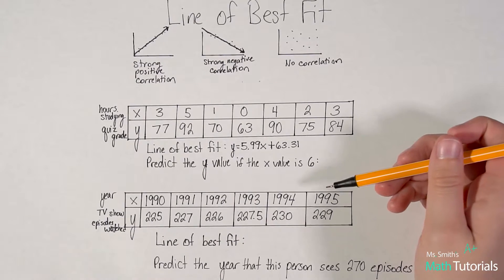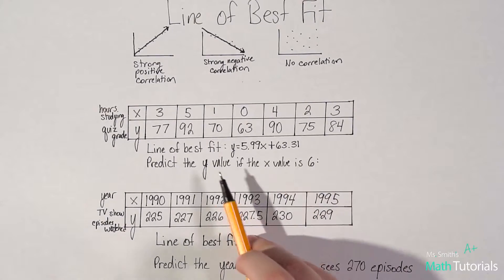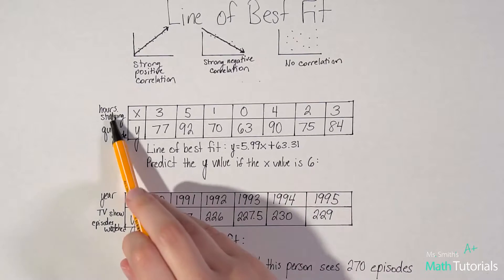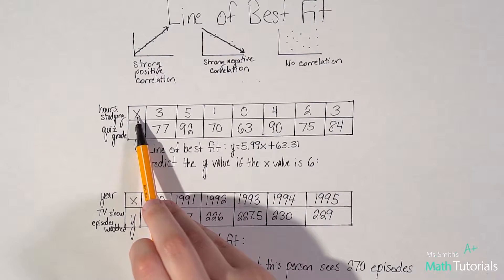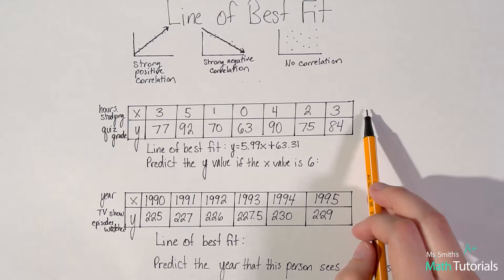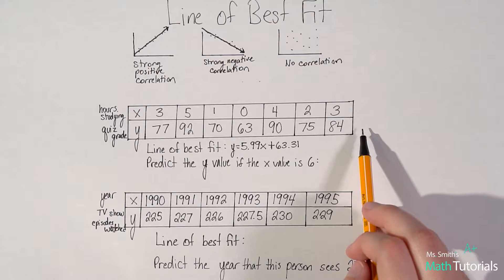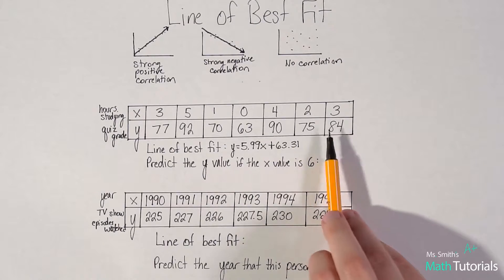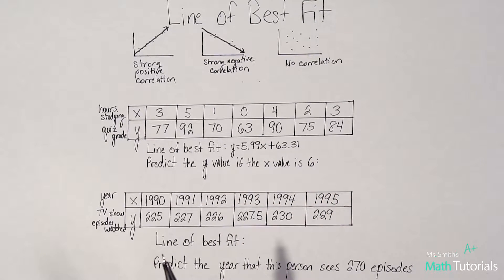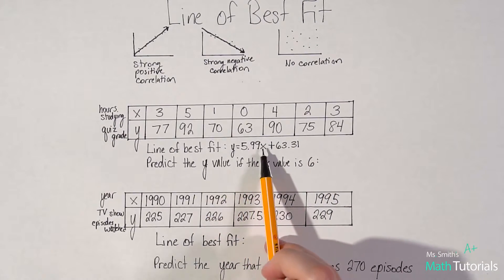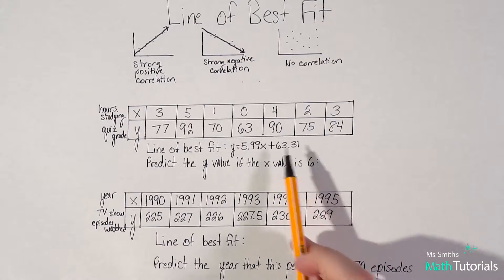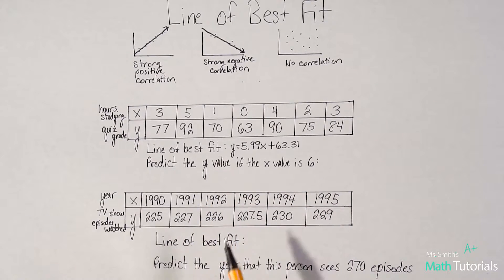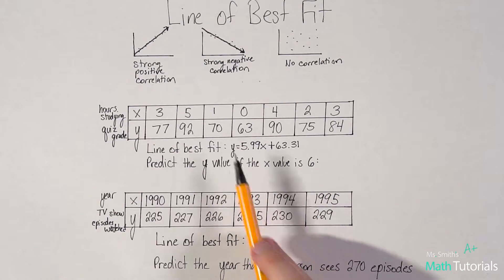Now here's kind of the fun part. Predict the y value if the x value is 6. If a student studied for 6 hours, what would be their predicted grade? Based on what everybody else studied and what they earned, what would be that person's grade? All we're doing is we're going to plug in 6 for our x value. If the x value is 6, what is the y value? So, we're going to plug 6 in for x and solve for y.